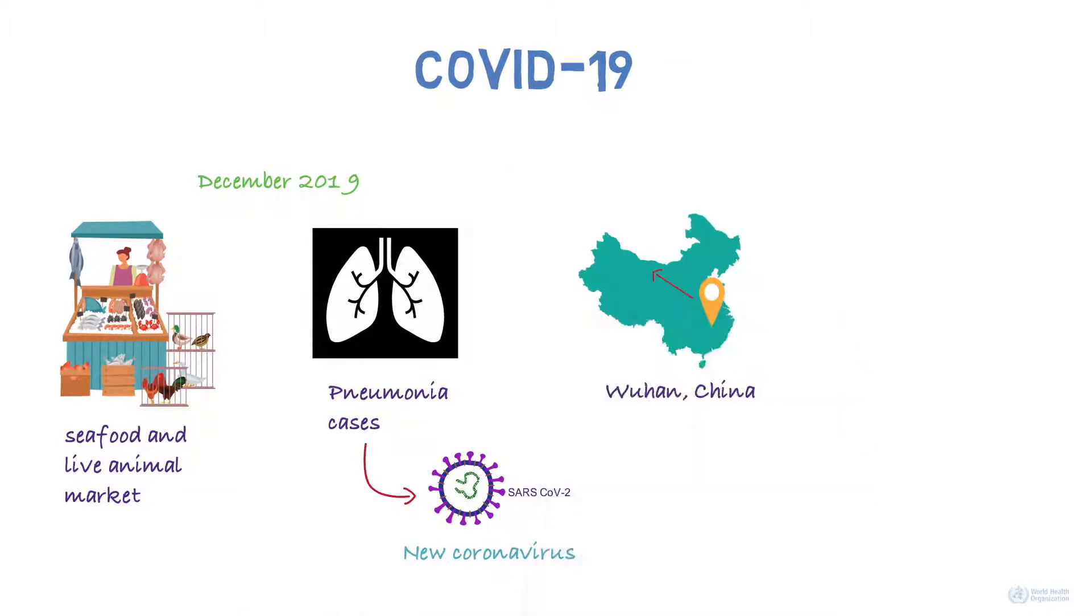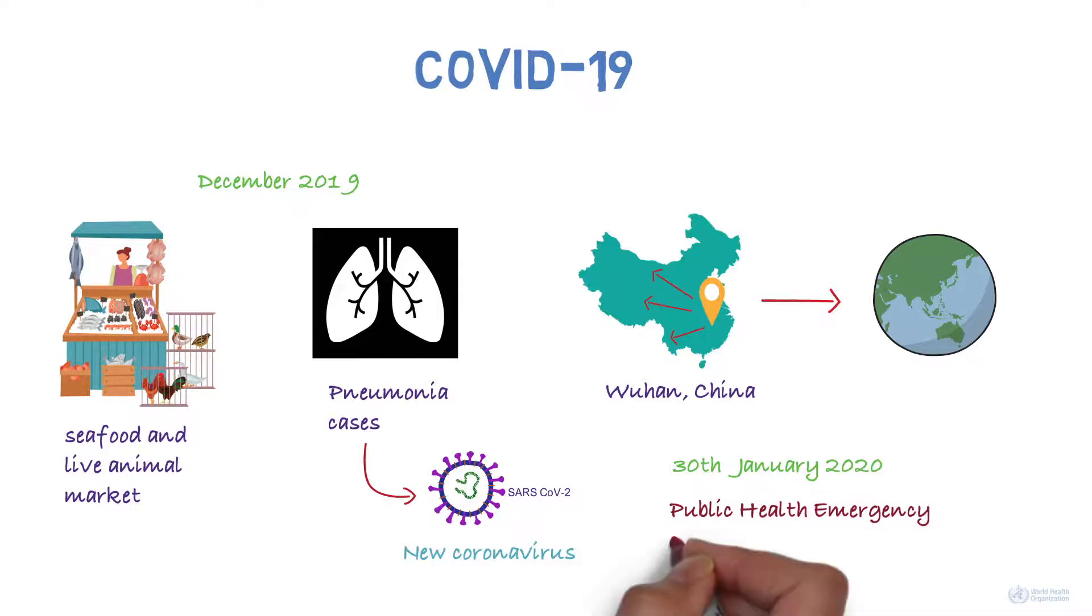COVID-19 spread within China and to the rest of the world. On 30 January 2020, the World Health Organization declared the outbreak a public health emergency of international concern.